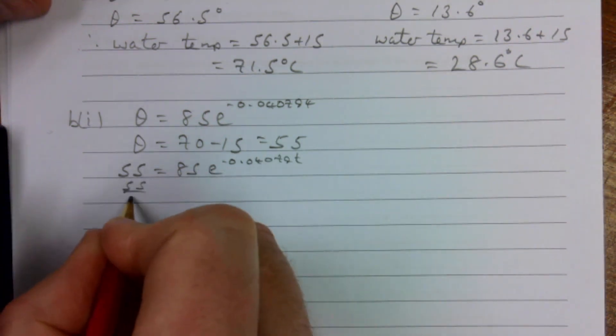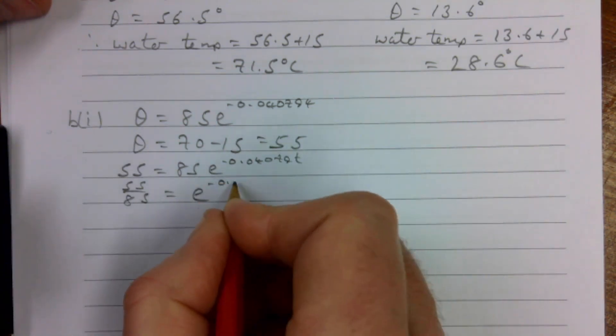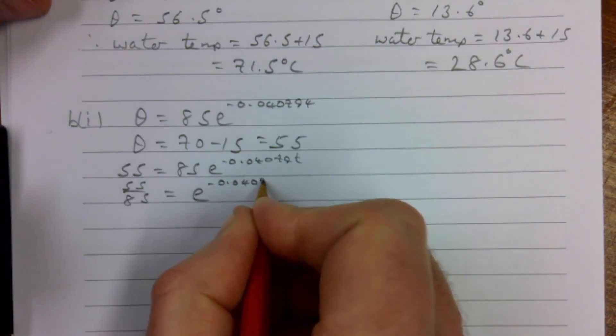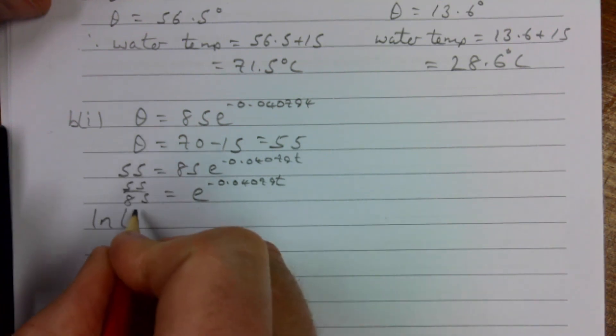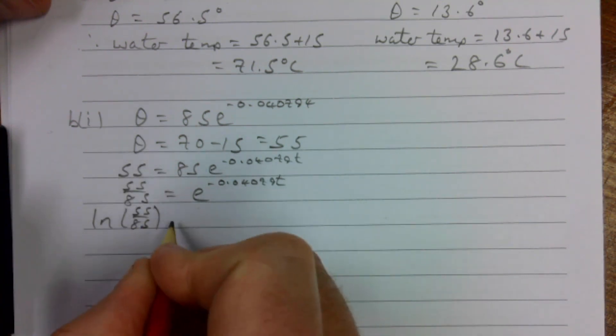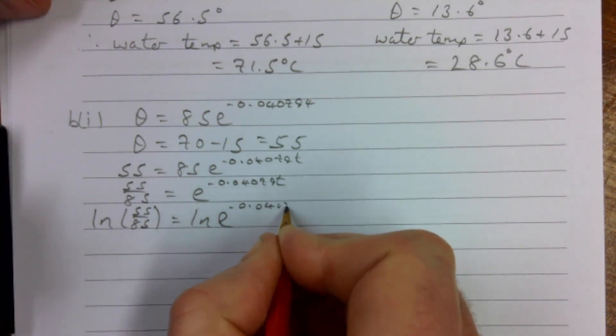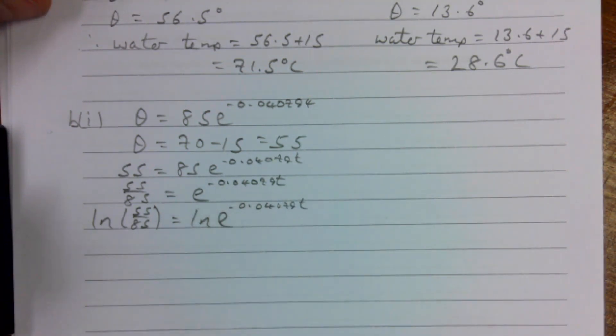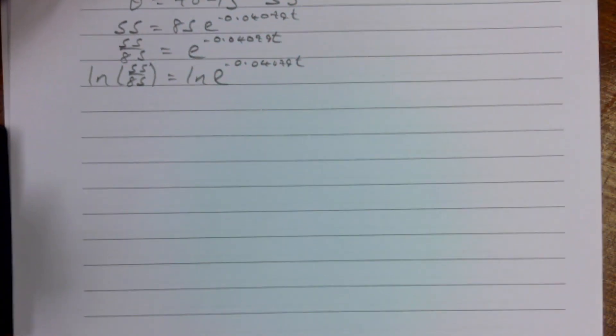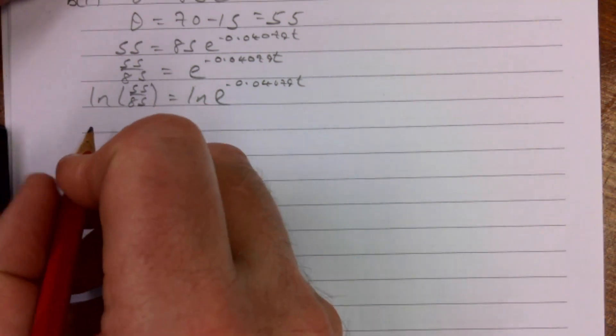55/85 = e^(-0.040790t). Taking natural log of both sides. We're going to bring this power down to the front and then the LN(e) is effectively going to disappear.